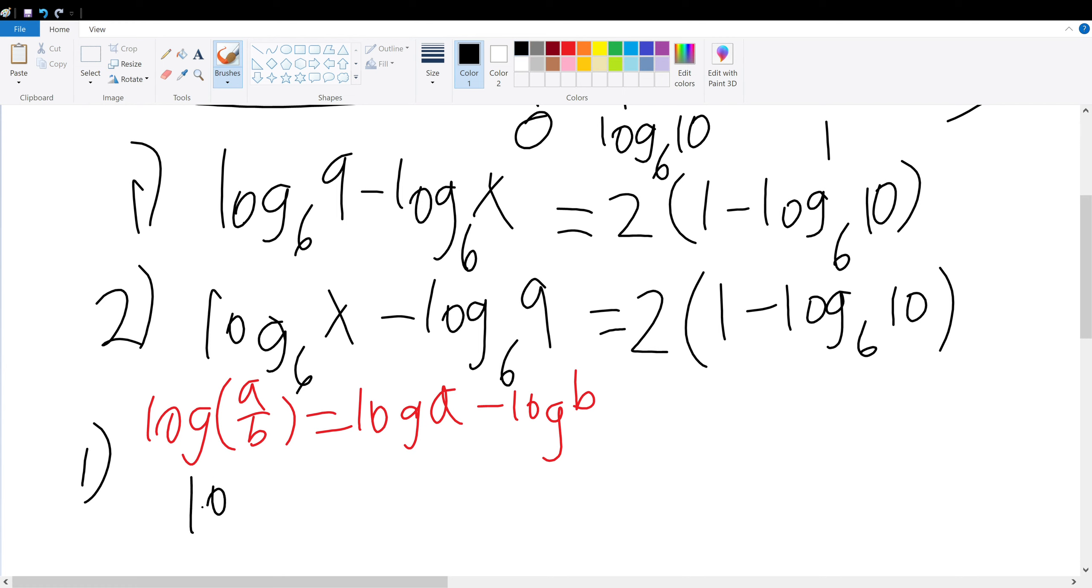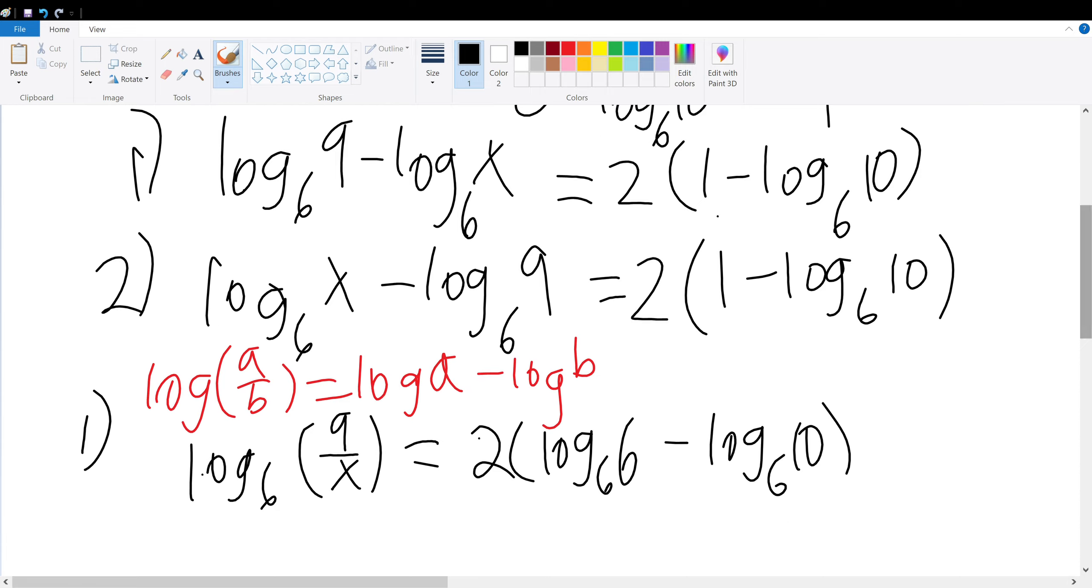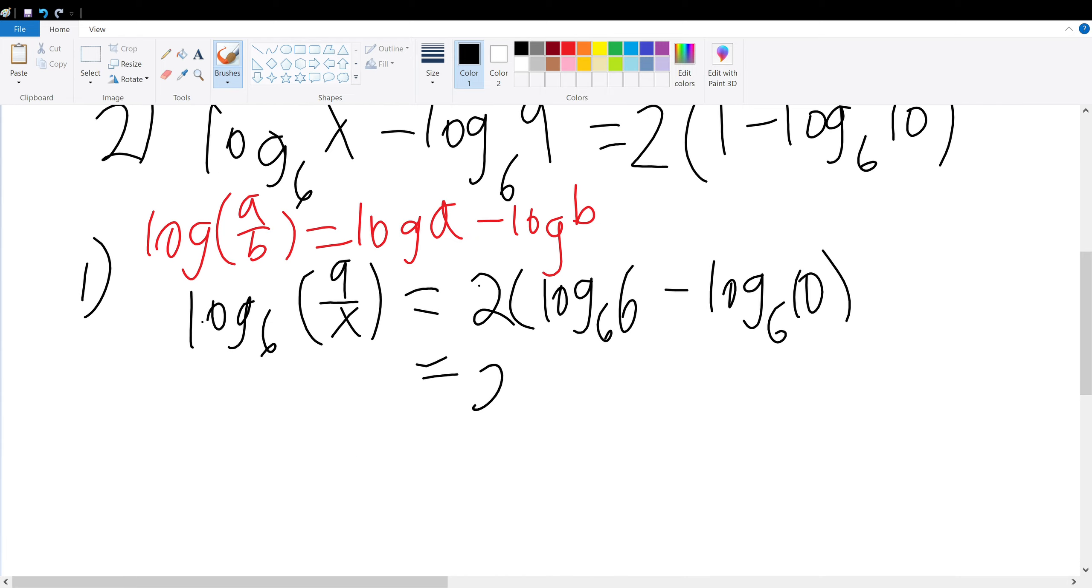Well, that's just log base 6 of 9 over x. And that term must be equal to 2 times 1 minus log base 6 of 10. But that's the same thing as 2 times log base 6 of 6 minus log base 6 of 10. So what is that simplified to? Well, that's equal to 2 times log base 6 of 6 over 10.